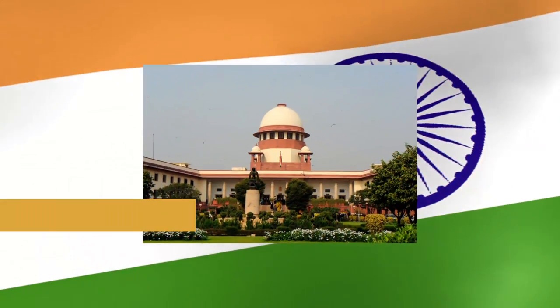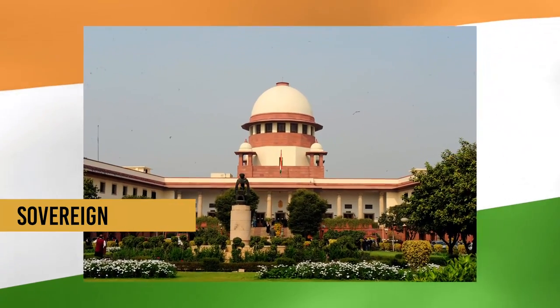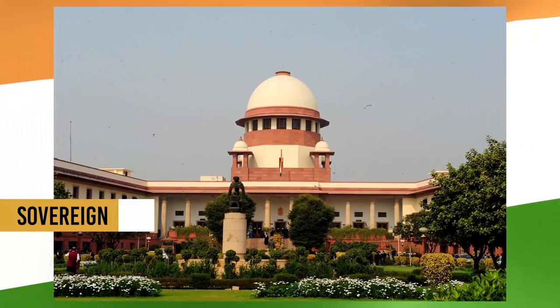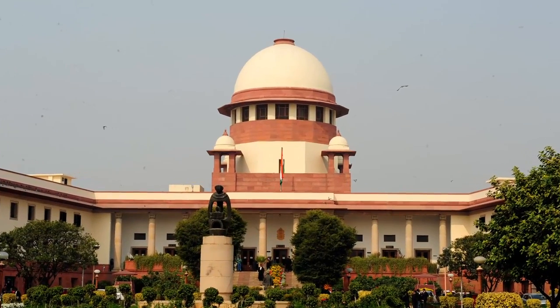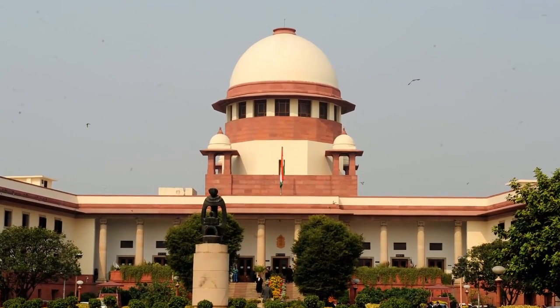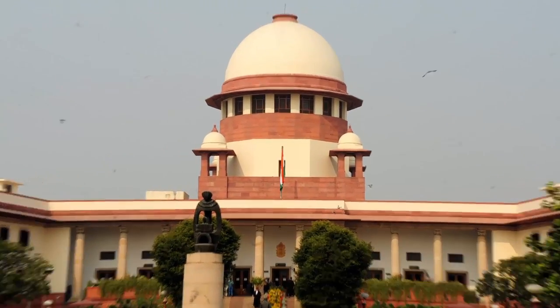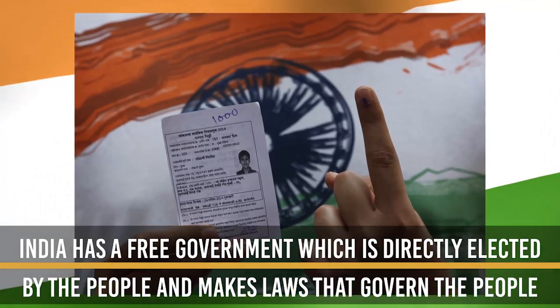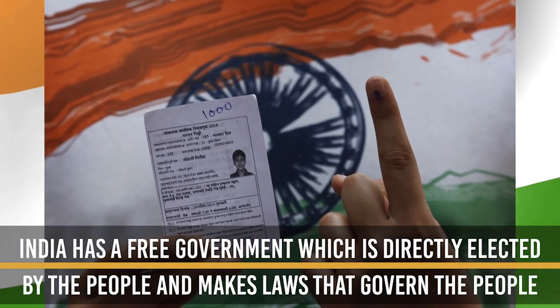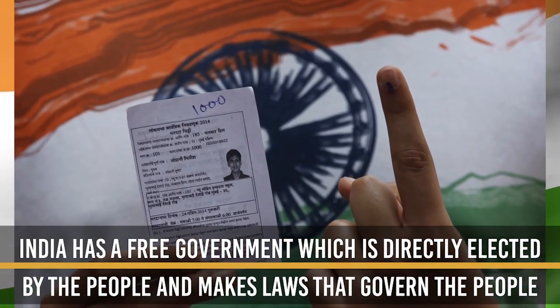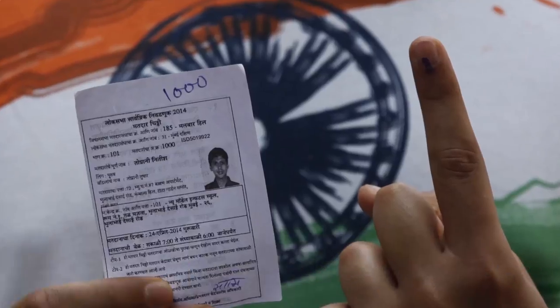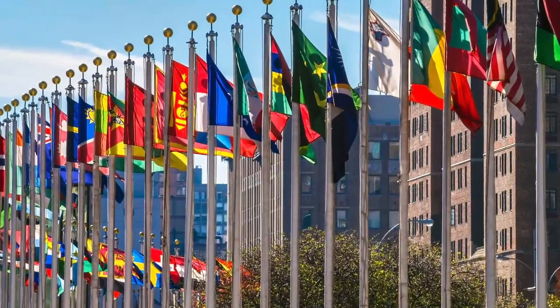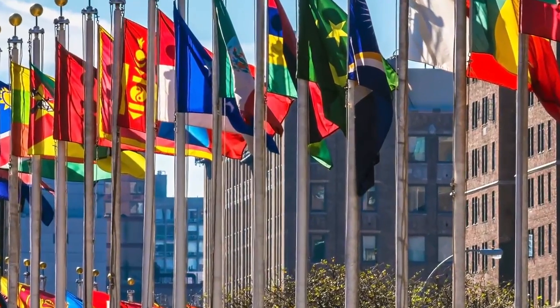Nature of Indian State — Sovereign: India is internally and externally sovereign, which means that India is externally free from the control of any foreign power, and internally it has a free government which is directly elected by the people and makes laws that govern the people. No external power can dictate the government of India.